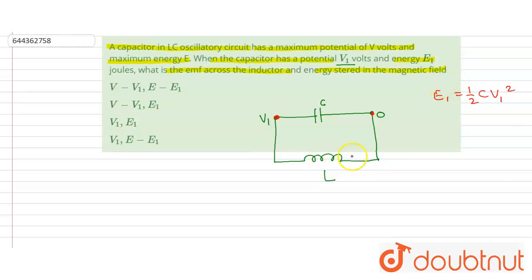Now we have to find the potential across this L and the energy stored in the magnetic field. If this is the potential difference across C, then the potential across this point and these points will be same. Here this will be 0 and here this will be V1. So the potential difference across the inductor is V1.